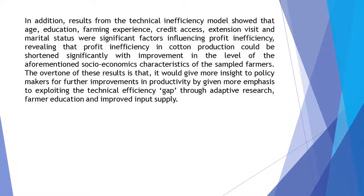In addition, results from the technical inefficiency model show that age, education, farming experience, credit access, extension visit, and marital status were significant factors influencing profit inefficiency, revealing that profit inefficiency in cotton production could be reduced significantly with improvement in the level of these socioeconomic characteristics of the sampled farmers.